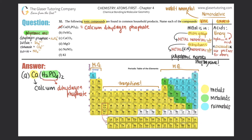Moving on to B: FeSO₄. Fe is iron, and iron is a transition metal, so we need a Roman numeral. The metal name stays the same — iron — then I have SO₄. Sulfur combined with oxygen means it has to be a polyatomic: sulfate is SO₄ with a 2− charge. So the end of the name is sulfate.